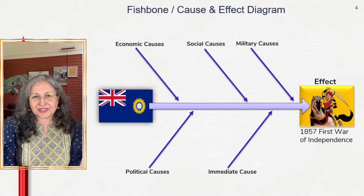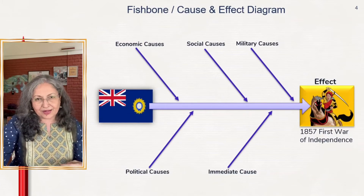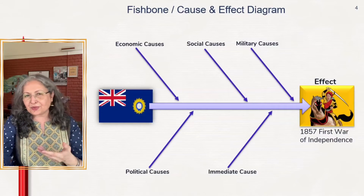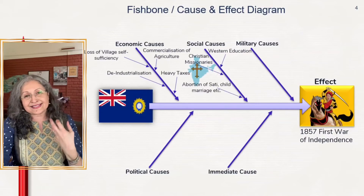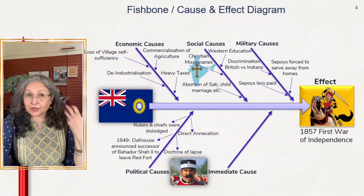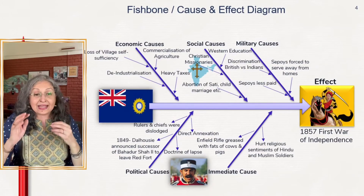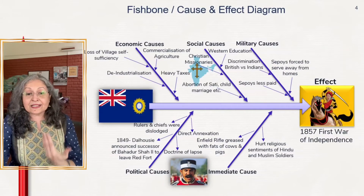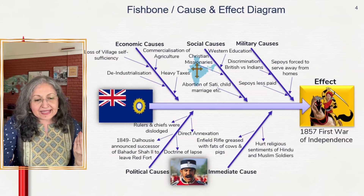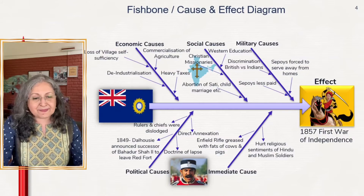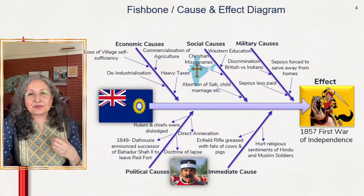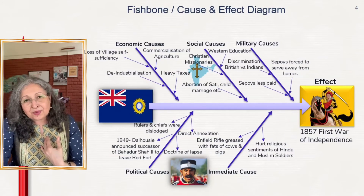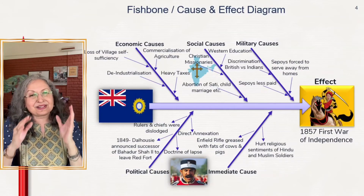You put down these causes first and then start putting sub-causes along the bones of the fish. There were Christian missionaries creating social disturbance. Military causes include soldiers being far from home, unrest, and unhappiness. Political causes — who doesn't remember the Doctrine of Lapse, Rani of Jhansi, and Dalhousie's acts? These are the history of a country we need to know, but I'm teaching you how to do a fish bone analysis, not teaching history.